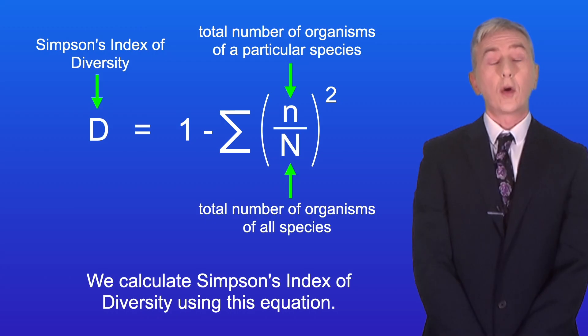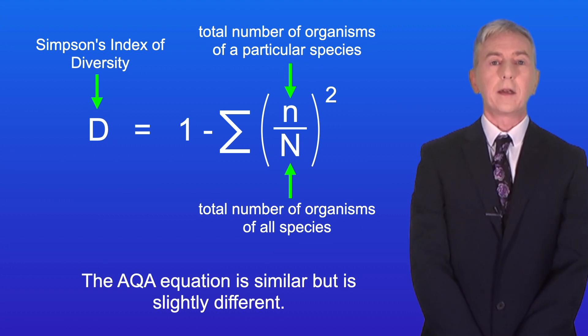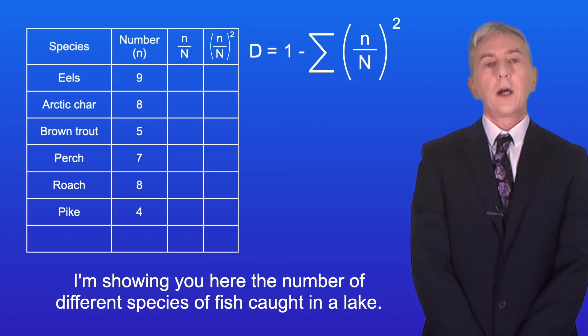Simpson's index of diversity, or capital D, equals 1 minus the sum of the total number of organisms of a particular species, divided by the total number of organisms of all species, squared. Now this equation is for the OCR spec. The AQA equation is similar but is slightly different.